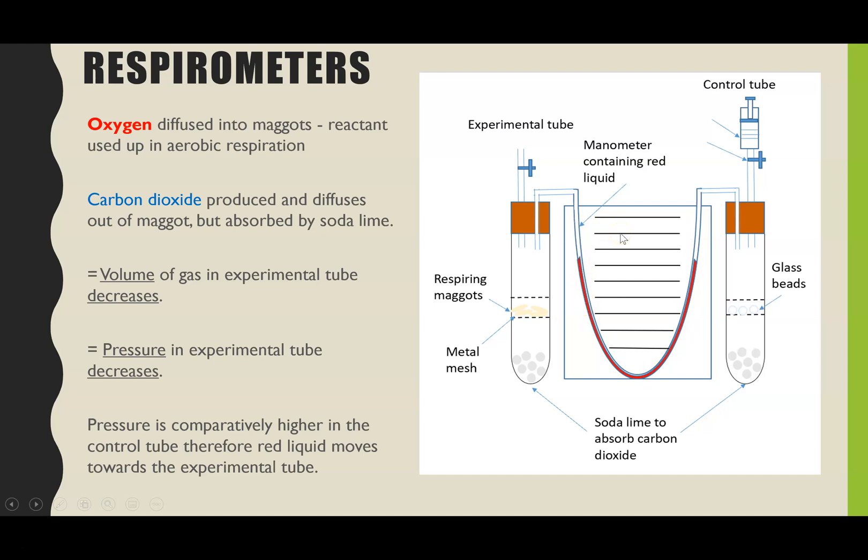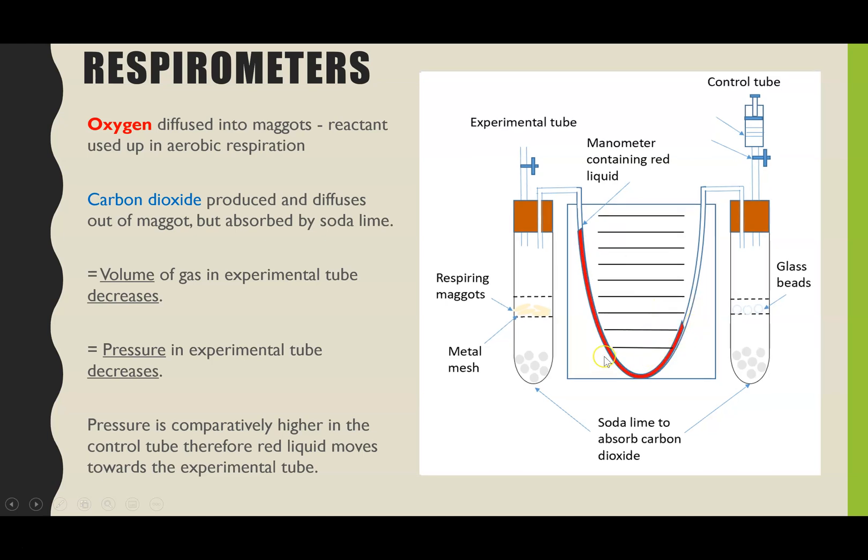So if we left it for five minutes we might expect to see the liquid has moved around. So at the end of that five minutes what we could then do is work out what was the rate of respiration. And the way to work this out is it's the volume of oxygen absorbed over a particular period of time for a particular mass of maggots.